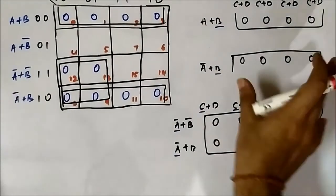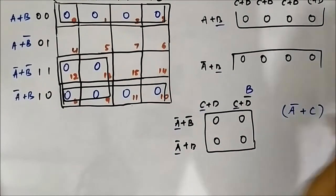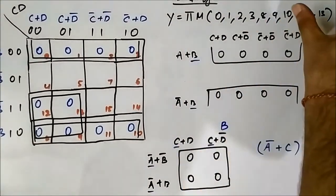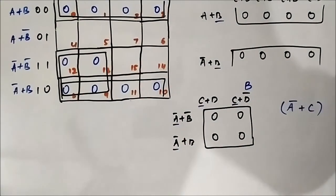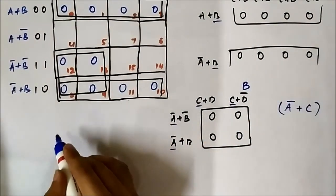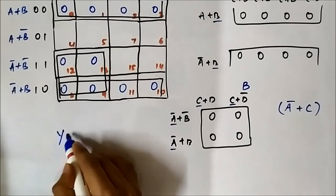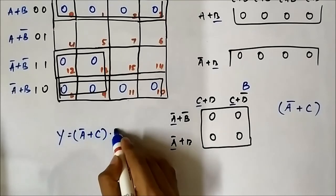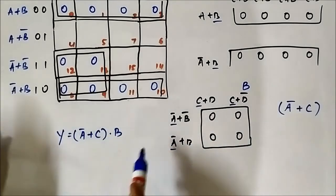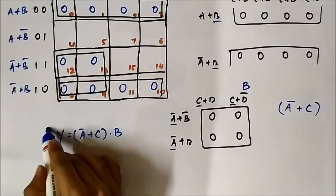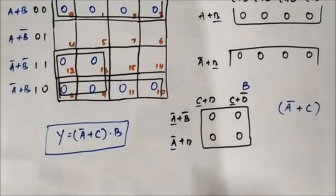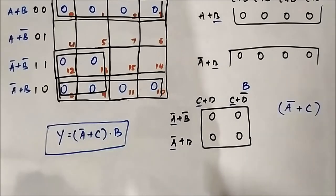Combining these two results — B and A bar or C — the simplified Boolean expression for this POS expression given in terms of max term values is (A bar or C) · B in product of sums form. This is the simplified Boolean expression.